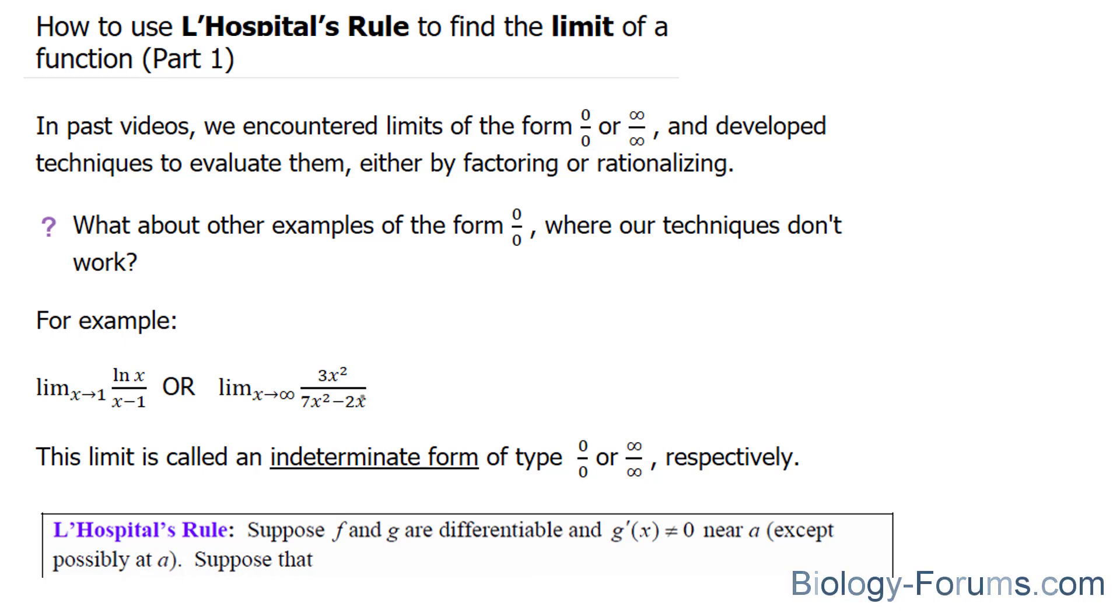For example, here are two functions where those techniques would be futile. This limit is called an indeterminate form of type 0 over 0 or infinity over infinity, respectively.